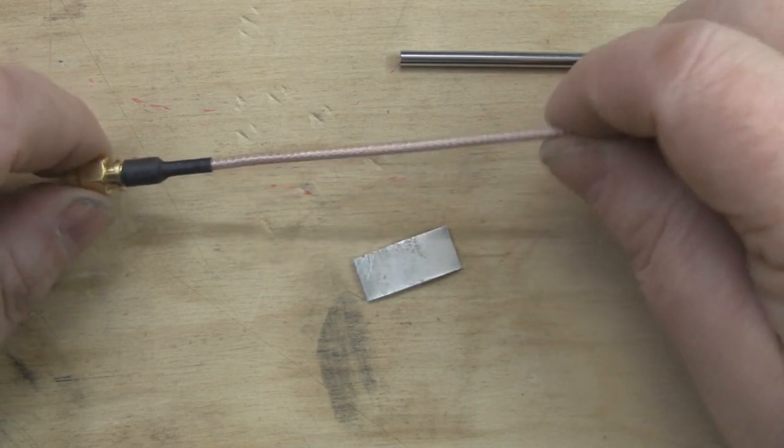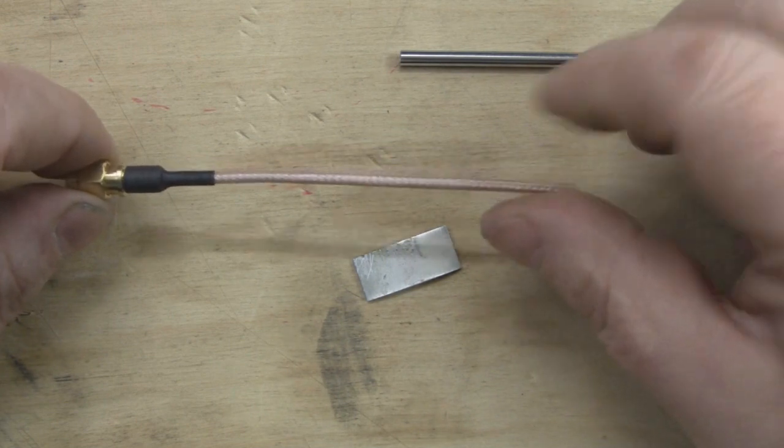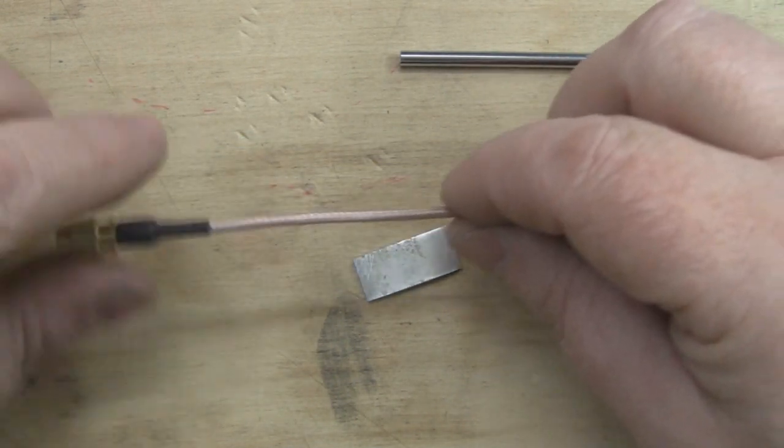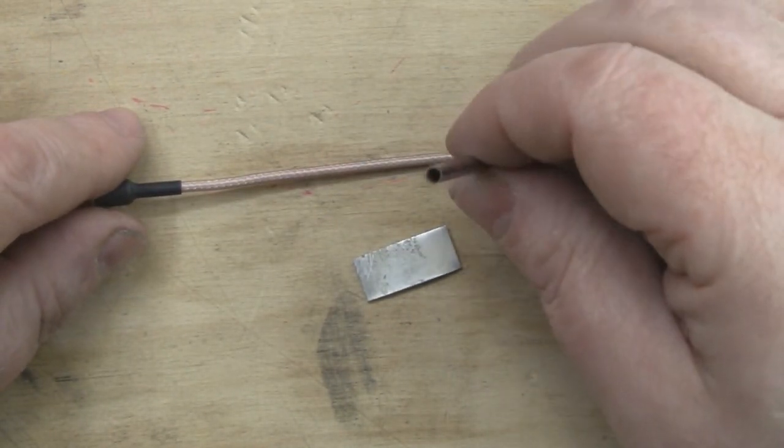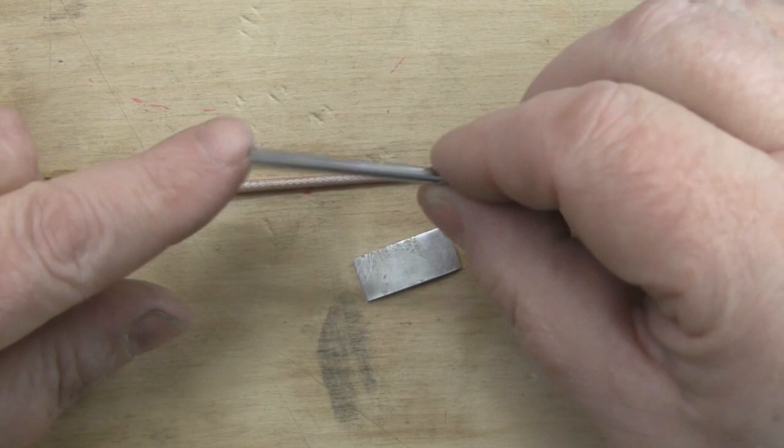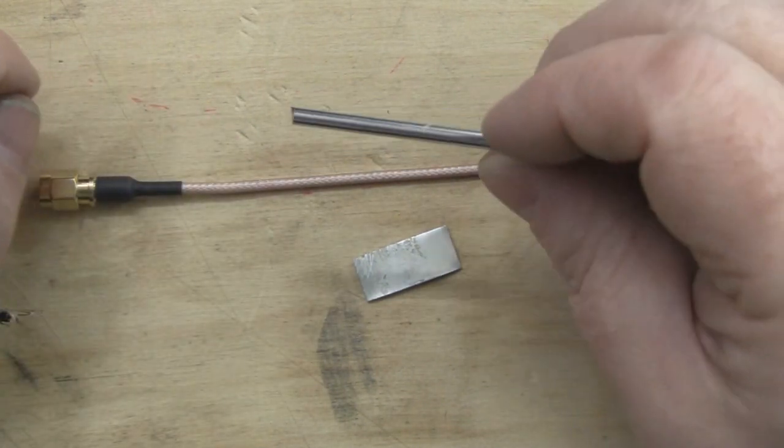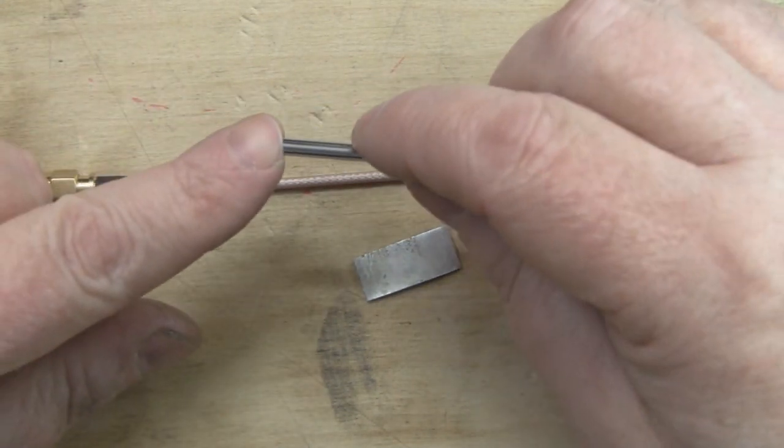I've got a length of RG316 coax here, it's about 100 millimeters long and I've already crimped on an SMA connector here at the base. What I also need is a piece of metal tubing that I can solder to, and this has come from one of those cheap telescopic antennas I've shown you before in previous videos - really good source for tubing to make dipole antennas.